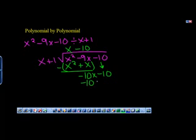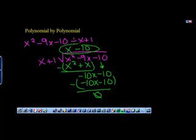We again will multiply that, negative 10x minus 10. If we subtract that, we get 0 as a remainder. Our answer of x squared minus 9x minus 10 divided by x plus 1 is x minus 10.